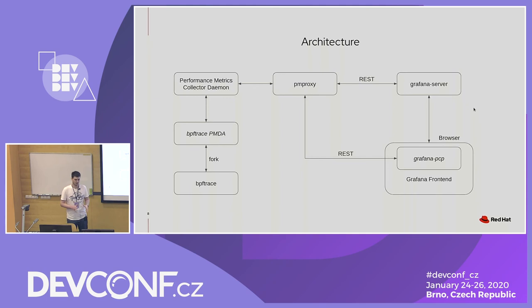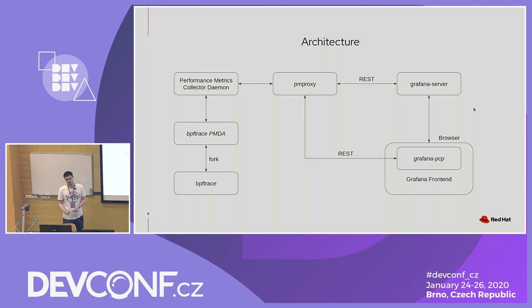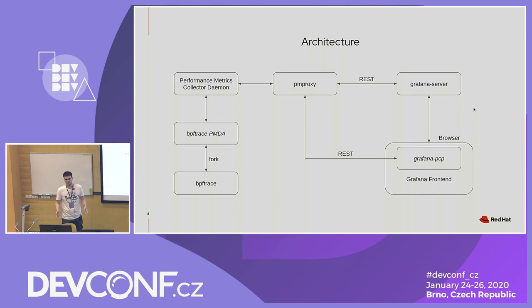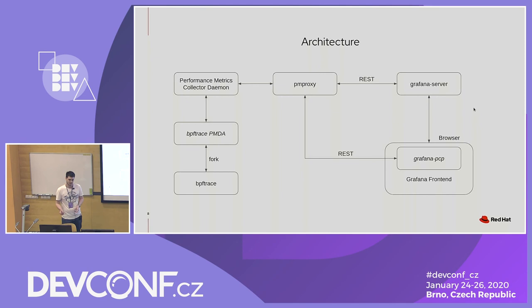PM proxy — the name is maybe a bit misleading. It started as a proxy, but it's now also used for exporting PCP metrics with a REST API, so you can access it through HTTP. On the right side we have the Grafana part. Grafana is not only a front-end application, it also has a daemon running called Grafana server. You can configure it so the browser directly connects to PM proxy to get the metrics, or it goes through Grafana server — for example, if you are behind a firewall and only have access to Grafana server, you can let Grafana server proxy the request. So when you open Grafana, it makes a request to PM proxy for the BPFtrace metrics, which goes forward to the PMDA, and if the script is not running, it starts it and returns the data.